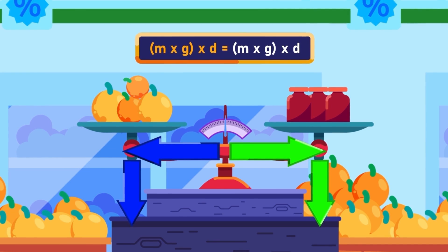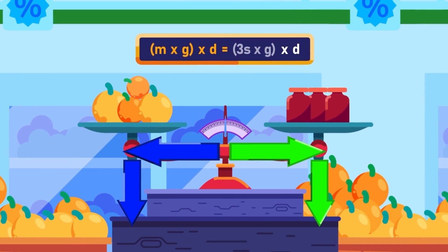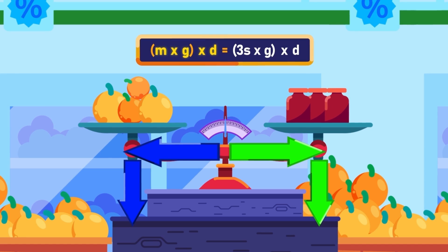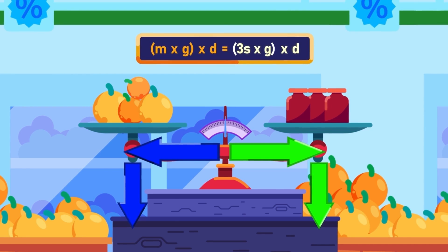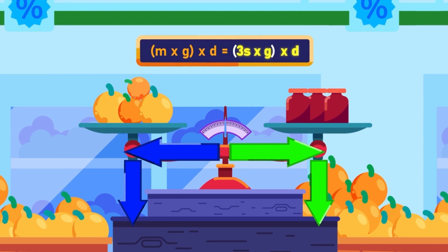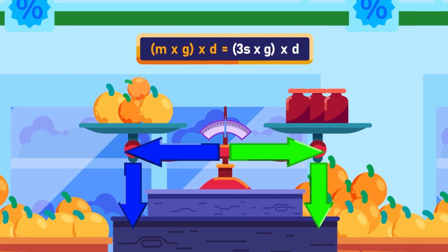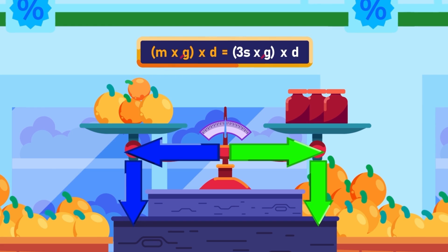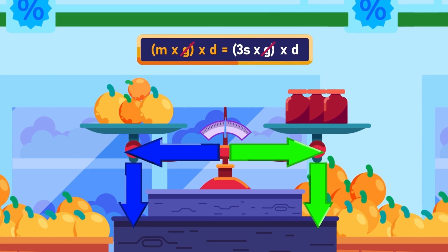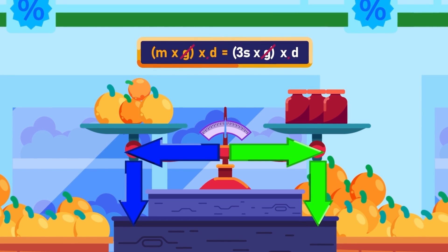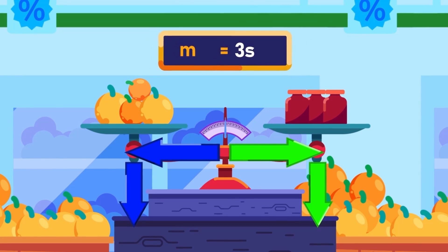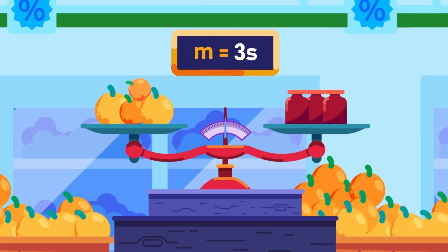Substituting the mass of calibration weights with 3s, when the equal arm beam is balanced, the mass m of the oranges is equal to the total mass of three calibration weights: m equals 3s.